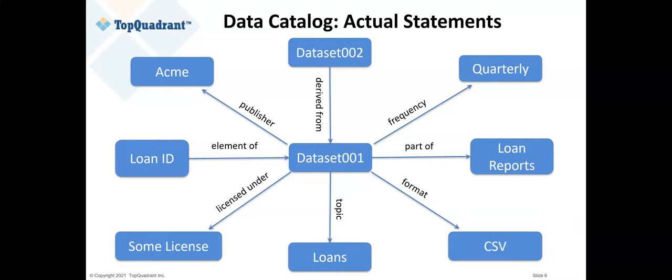With the model in place — giving us instruction, guidance, and understanding — and the controlled vocabularies in place, we can start stringing real statements together. Once you can do this, you have something ready to be automated, enriched, governed, and consumed, which are really what you're ultimately doing all of this for.